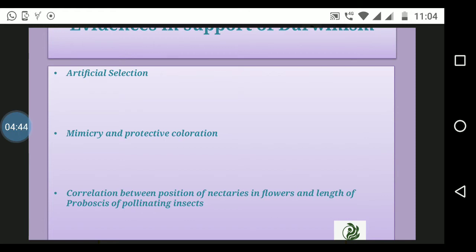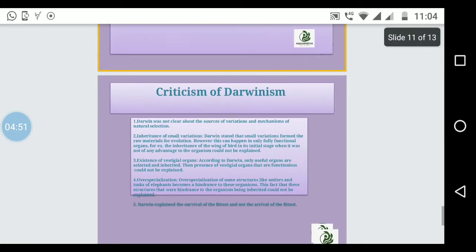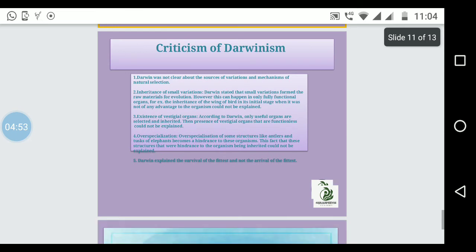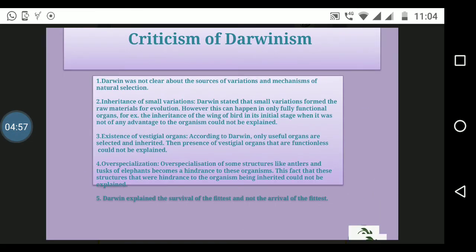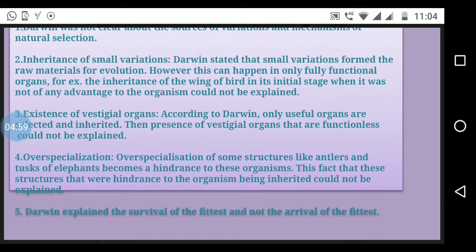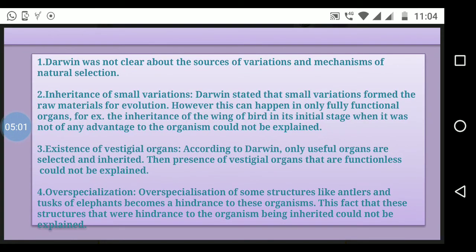So we will cover 7 marks: 3 plus 4. The remaining 3 marks, how do we write? We explain criticism of Darwinian postulates. We've covered 3 plus 4 plus 3 marks, totaling 10 marks.